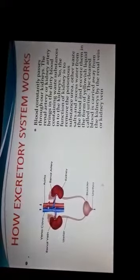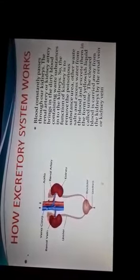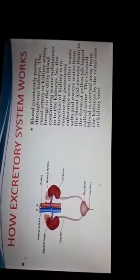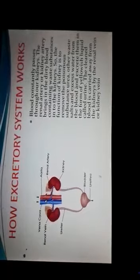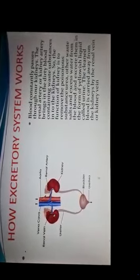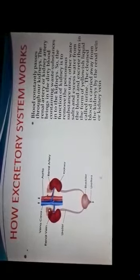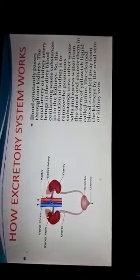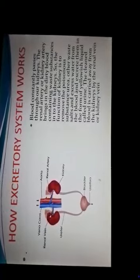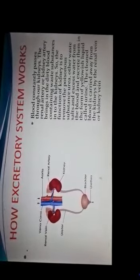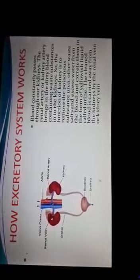Now let's see how the excretory system works. These blue and red tubes you can see are our arteries and veins. What happens is blood constantly passes through our kidneys. This blood brings dirty blood containing waste substances into the kidneys.